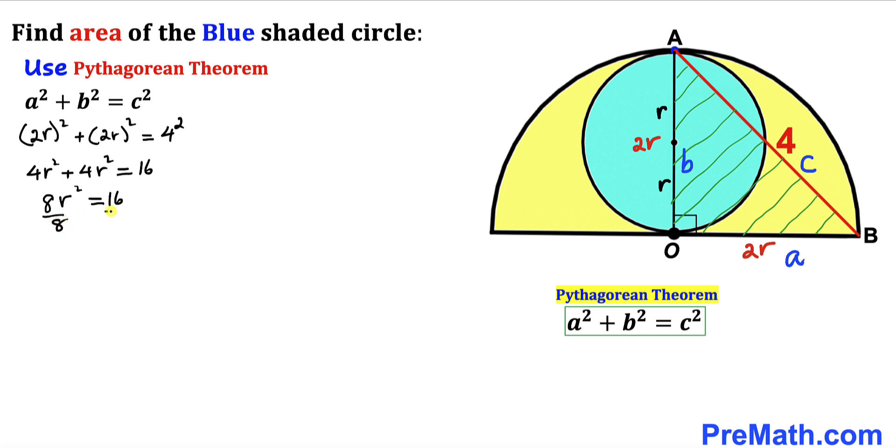Let's divide both sides by 8. So that means our r² is going to be 2. Let's undo this square by taking the square root on both sides.